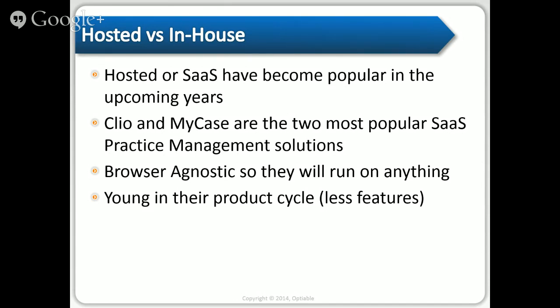One thing to be careful about: make sure the software you choose is browser agnostic, so it will run on anything. Most cloud-based software is browser agnostic, but you don't always have full functionality in one browser that you have in another. A lot of lawyers can relate to the federal court system's PACER, which has been notoriously picky about what browser you use — Mac users particularly find issues. Browser agnostic means it works the same no matter what browser you're using.